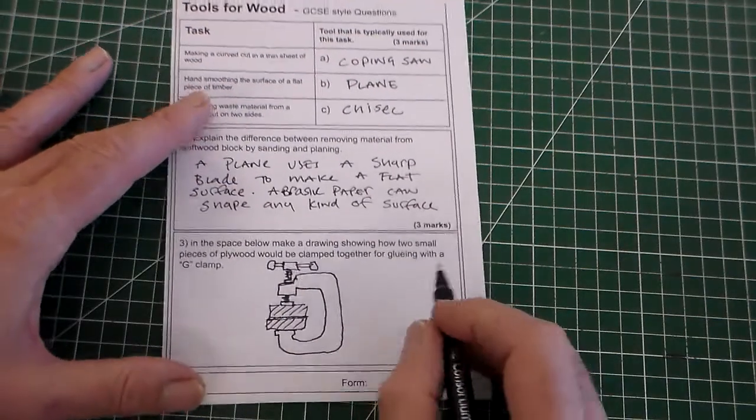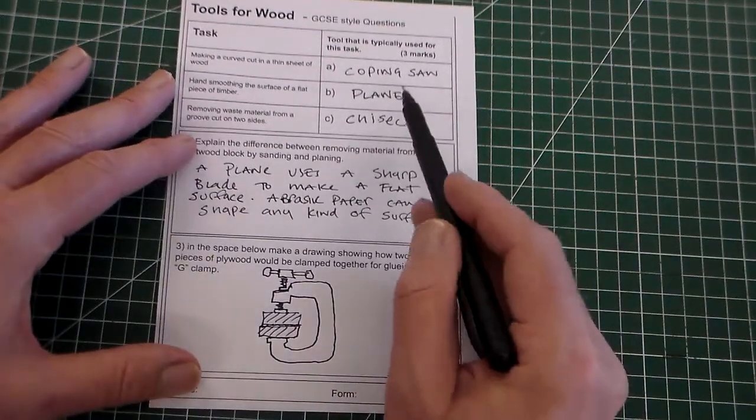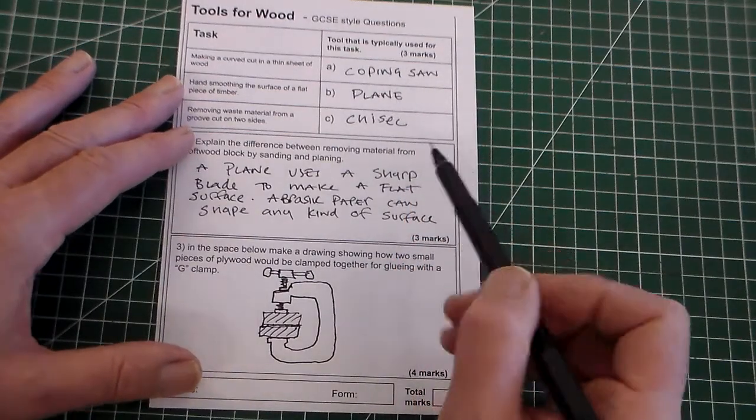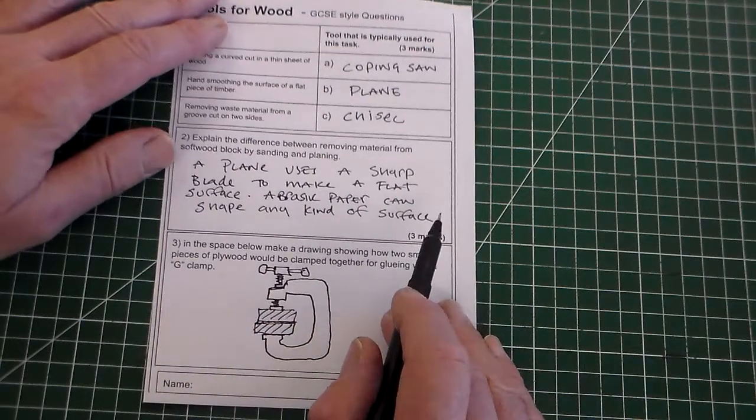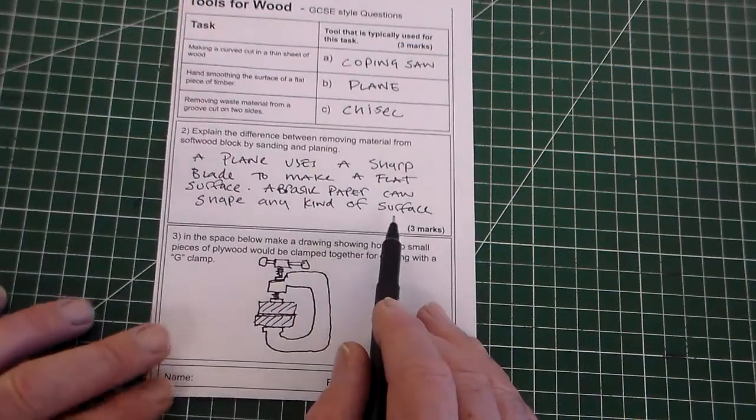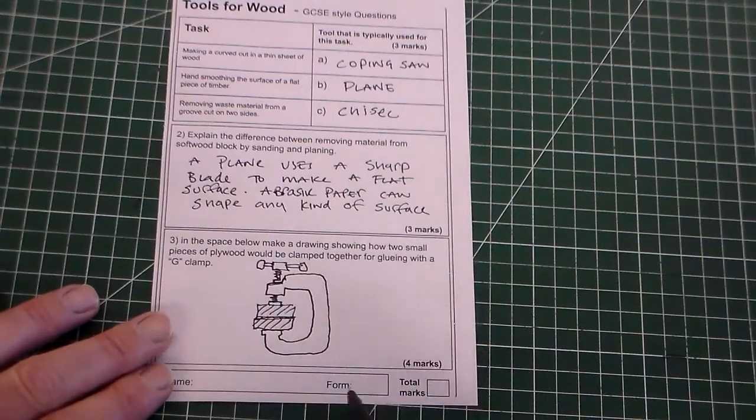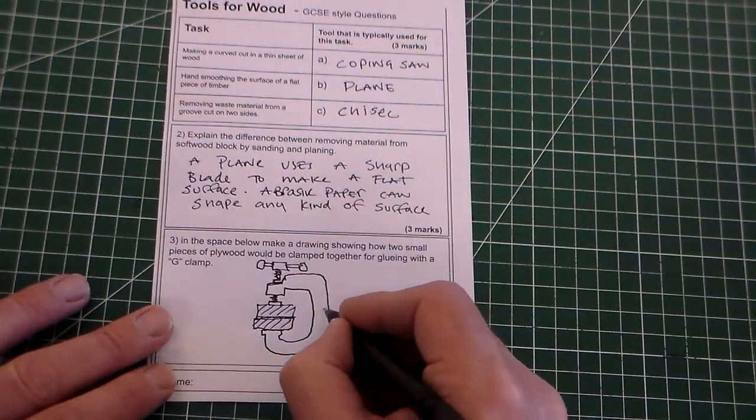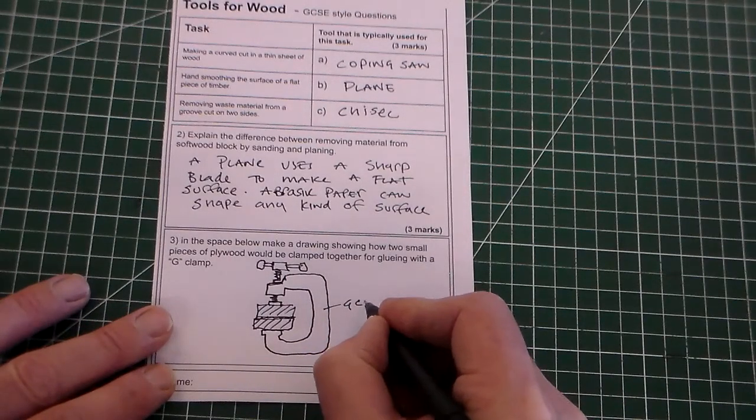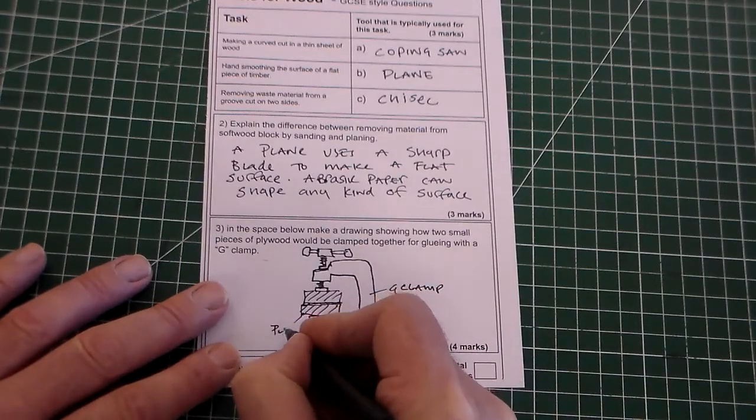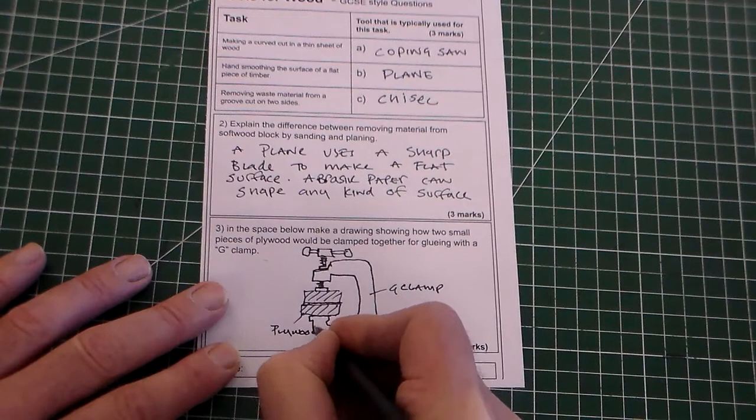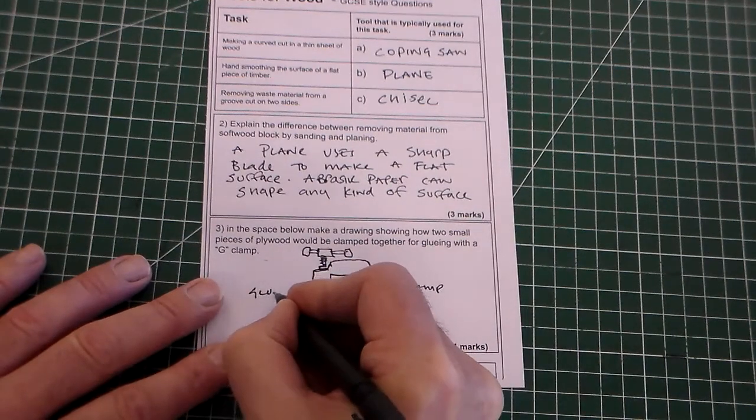And there it is. So, three questions. Answers: coping saw, plane, chisel. That would be three marks. This one, the difference between planing and sanding. Another three marks for this question. And last of all, the drawing here. We might just put G-clamp, plywood, glue.